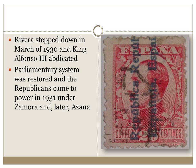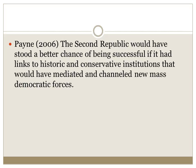Another general took over after Primo de Rivera, then elections were called. In 1931 the Republicans came to power and the parliamentary system was restored, though we'd already had a seven-year break under a system that was already struggling. Zamora came to power, and later Azaña. Payne argues the Second Republic would have stood a better chance if it had links to historic and conservative institutions that could have mediated and channeled the new mass democratic forces.